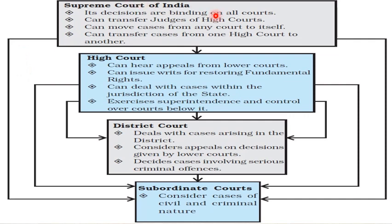Now, look at this flowchart representation of the structure of the judiciary of India. The Supreme Court is at the topmost level, subordinated by the High Court, and then the District and Subordinate Courts. Both the Supreme Court and the High Court have the authority to look at the working of the subordinate courts. Under the High Court is the District Court. This is the hierarchy of the courts in India.